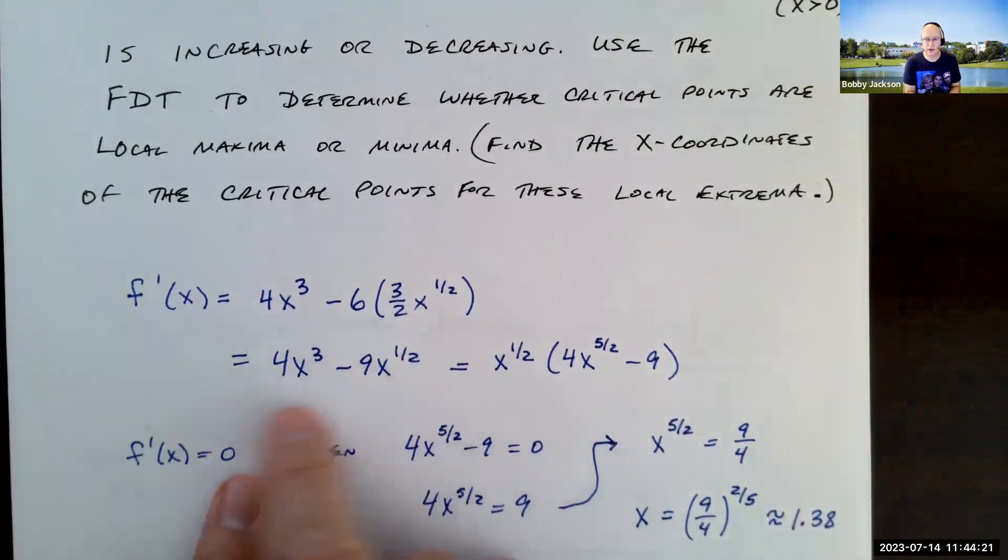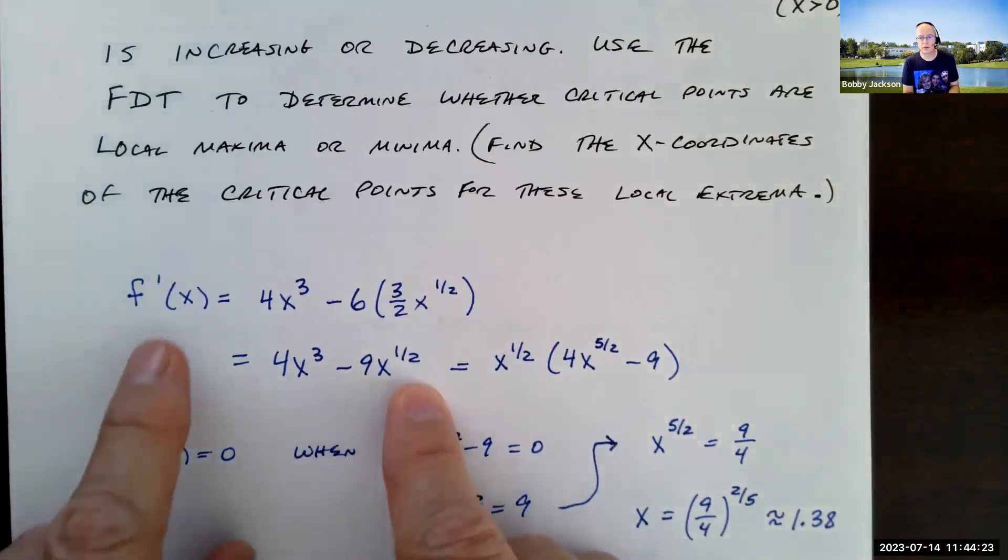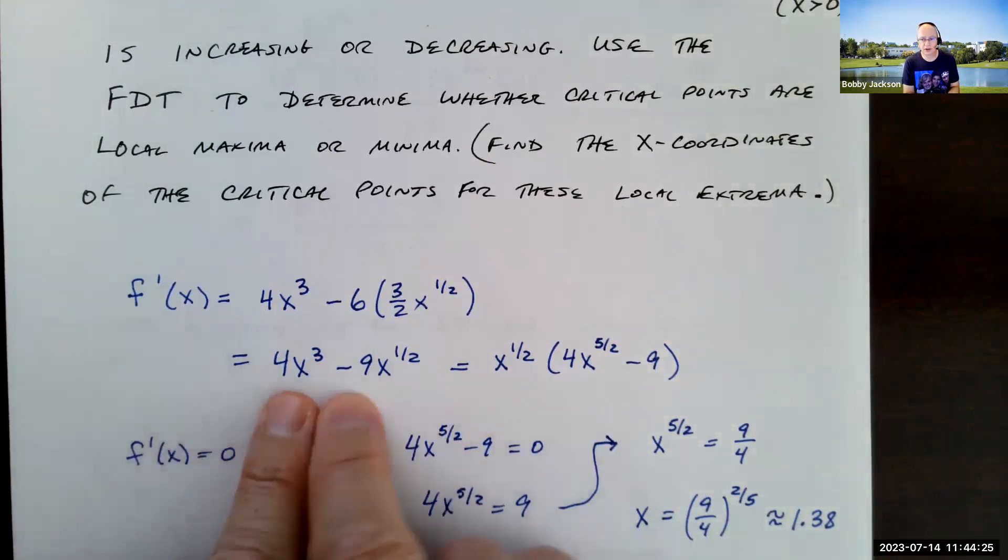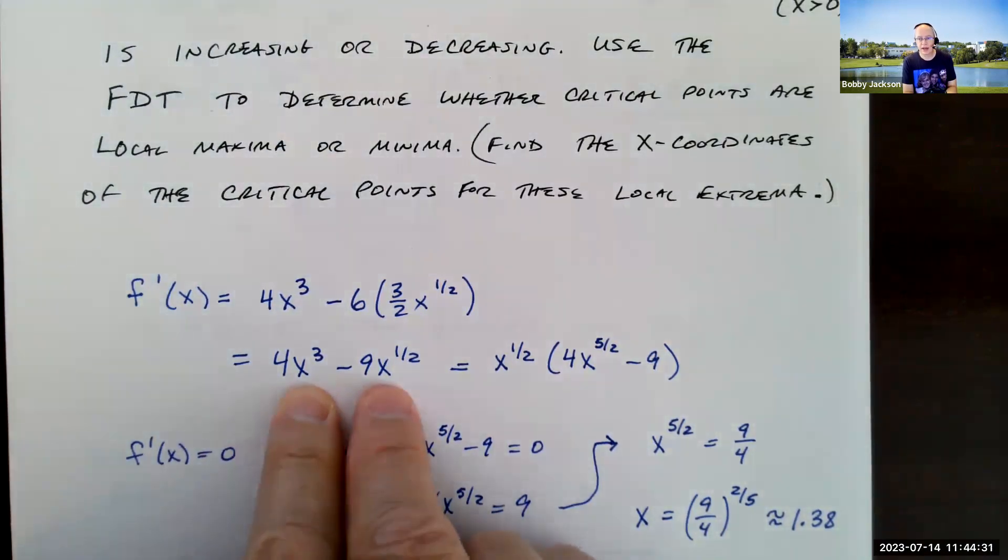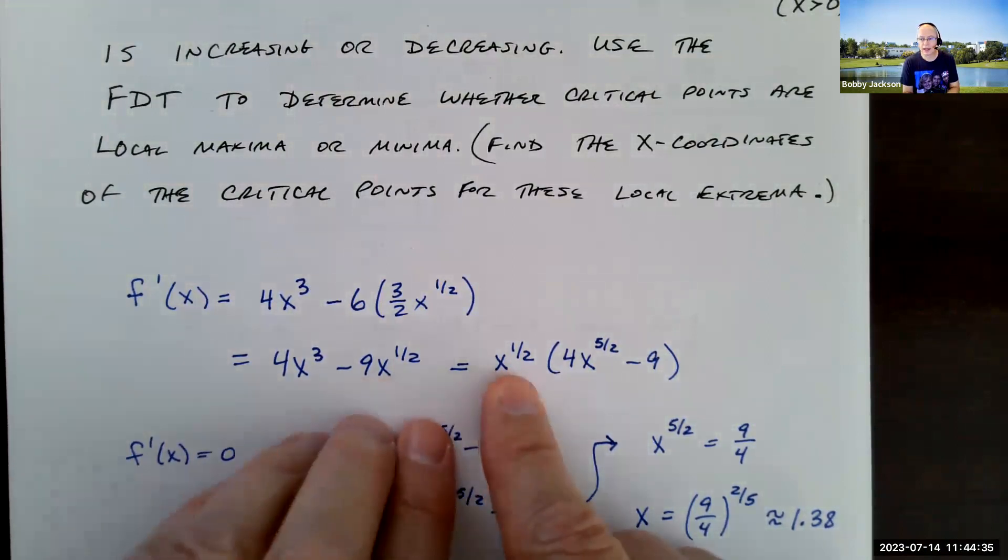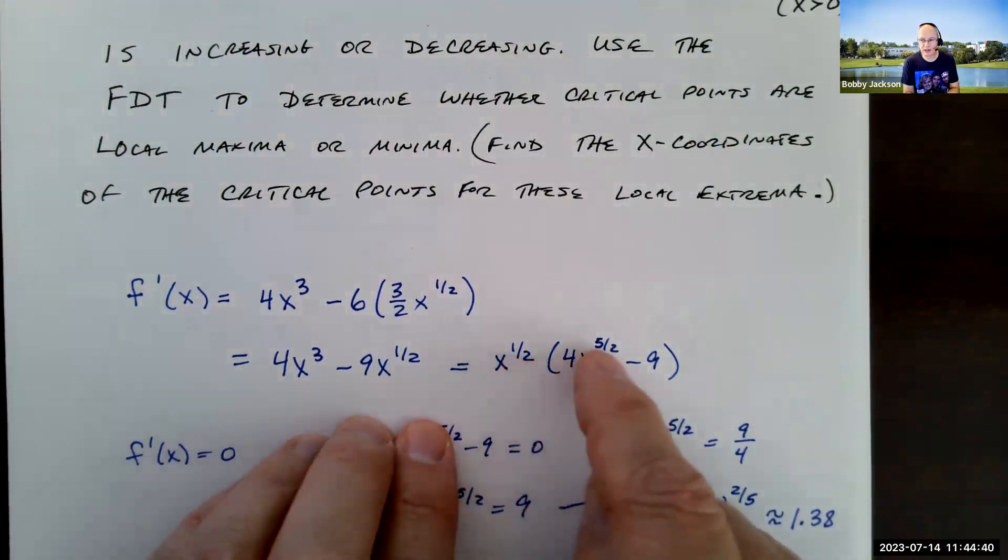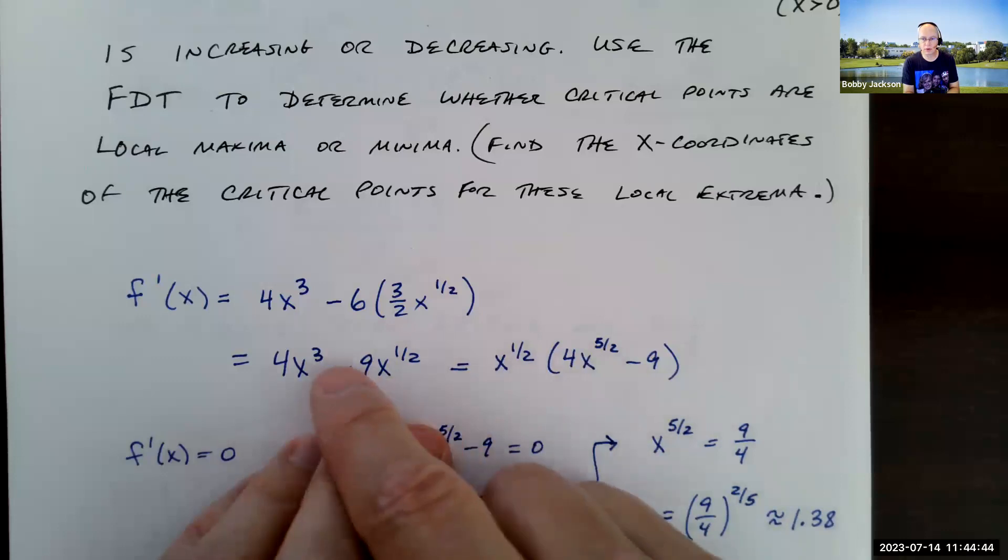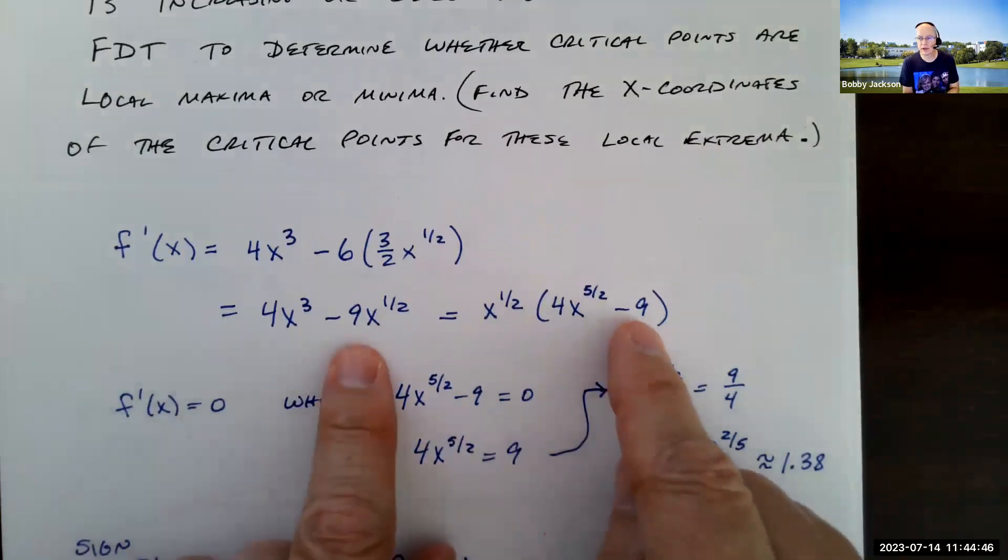And then here's my derivative to help me find out where the derivative is zero, because it's never undefined for any positive value of x. So I'm going to factor out x to the one half power, that's the smallest power of x. That's going to leave me 4x to the five halves. Remember when we multiply these back through, we're going to add the exponents. So one half plus five halves is six halves or three. And then I'm just left with nine here.